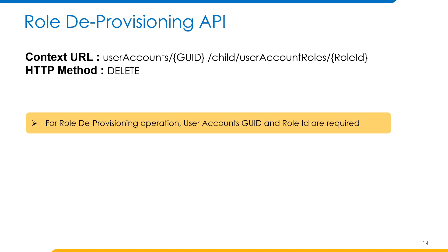The next one is Role Deprovisioning API. While managing user accounts for workers in our organization, we also need to manage the roles assigned to the user accounts based on the level of access required for the workers. This API is used to revoke roles of a user account. The HTTP method used for this API is PATCH. For the role deprovisioning operation, we need user accounts GeoID and roleID.